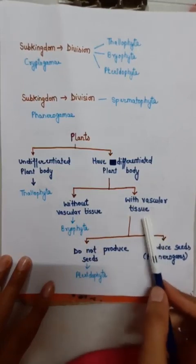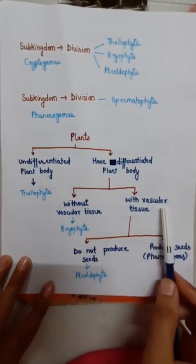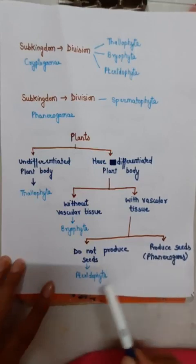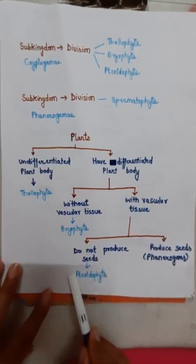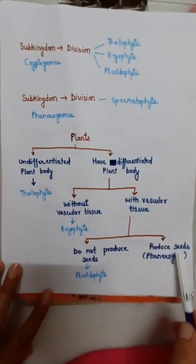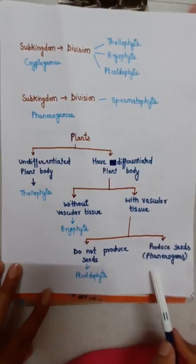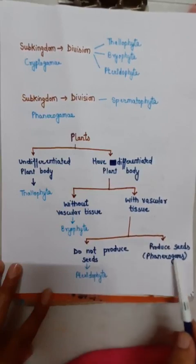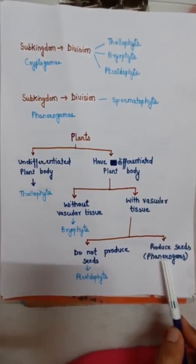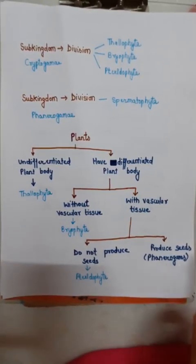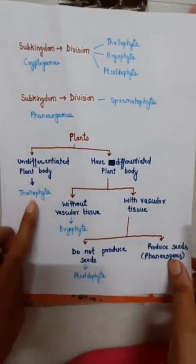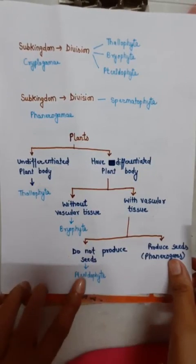Plants with vascular tissue — where xylem and phloem are present — are divided into two parts: those that do not produce seeds, which is the division Pteridophyta, and those that produce seeds, which is the division Spermatophyta. Spermatophyta corresponds to sub-kingdom Phanerogamae.